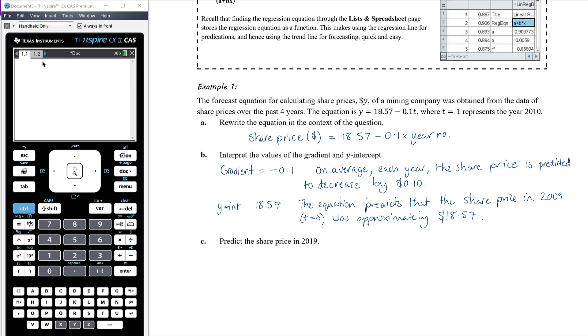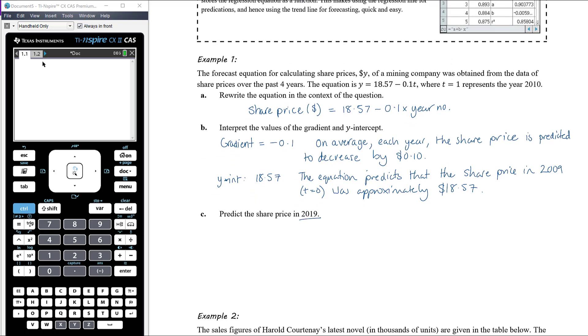Predict the share price in 2019. So t equals 1 is 2010. So 2010, 11, 12, 13, 14, 15, 16, 17, 18, 19. So 2019 is t equals 10. So we've got our equation, which says that share price is equal to 18.57 minus 0.1 times the year number, and this is year number 10. So 18.57 minus 0.1 times 10 means that we would predict $17.57.